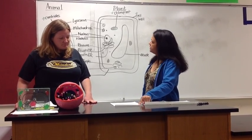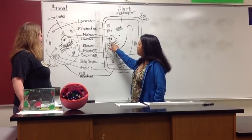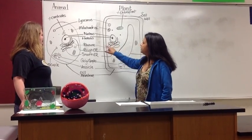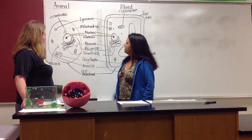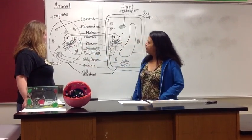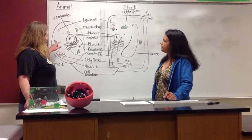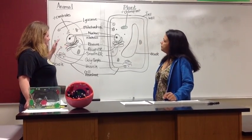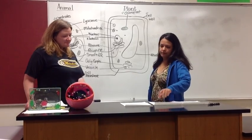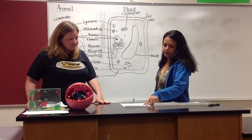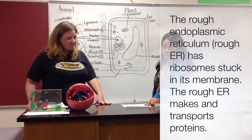The rough ER is located right outside of the nucleus. It's called the rough endoplasmic reticulum because it has ribosomes attached to it, which makes it look rough. It helps to make and transport proteins.